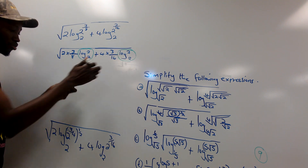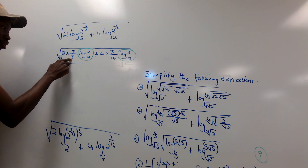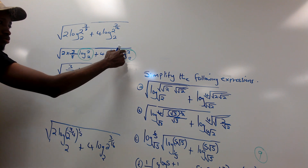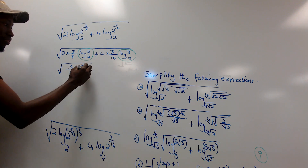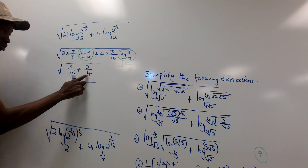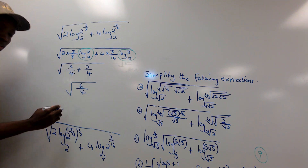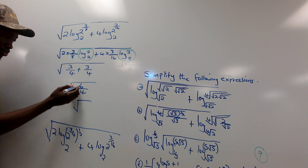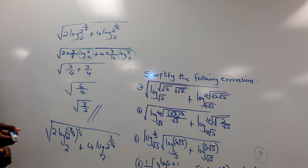With denominators the same, we add the numerators: 3 + 3 = 6 over 4. Simplifying by dividing by 2: 3/2. Since the overall expression is inside the square root, the answer for part A is the square root of 3/2.